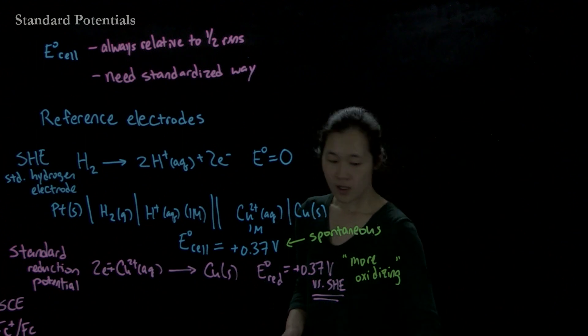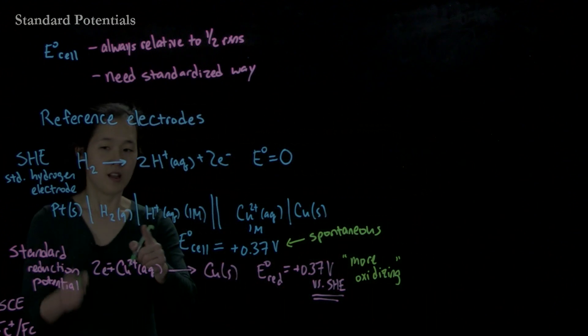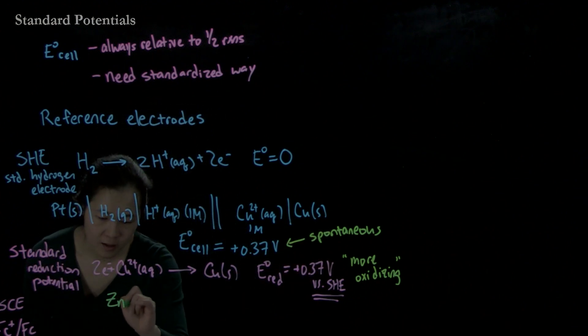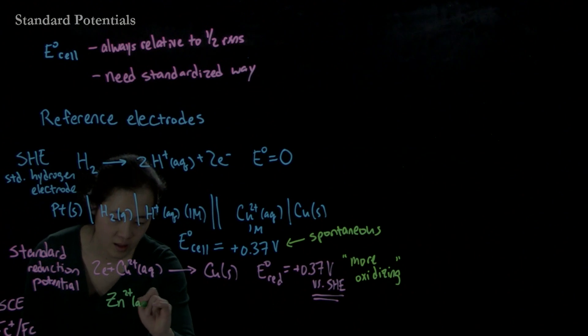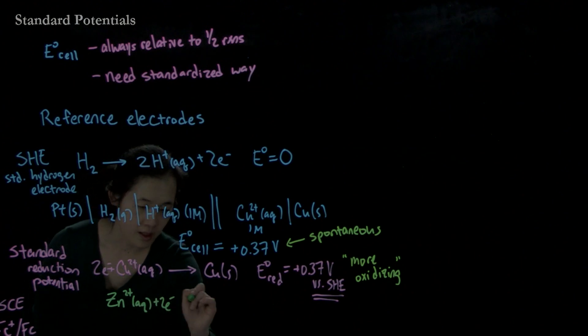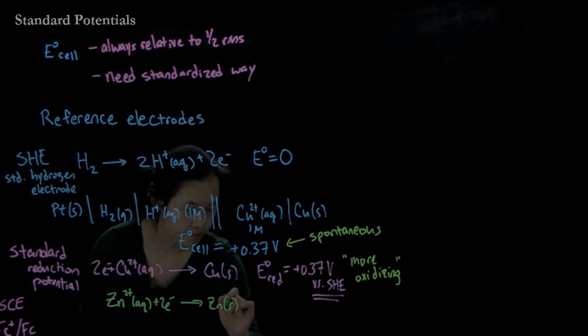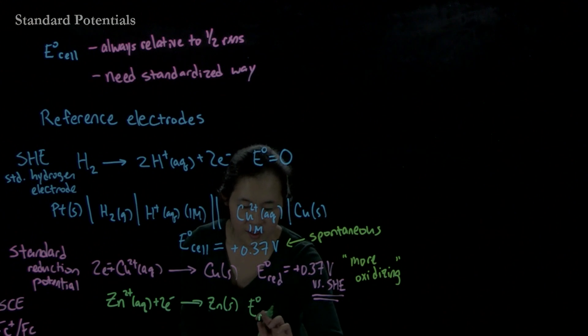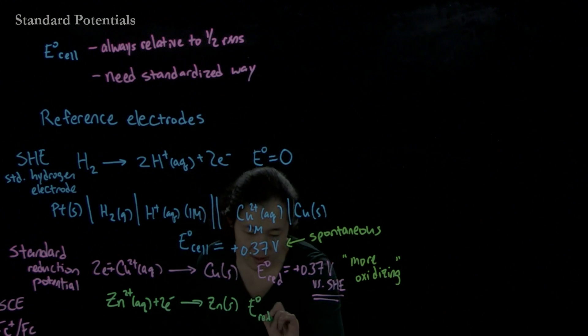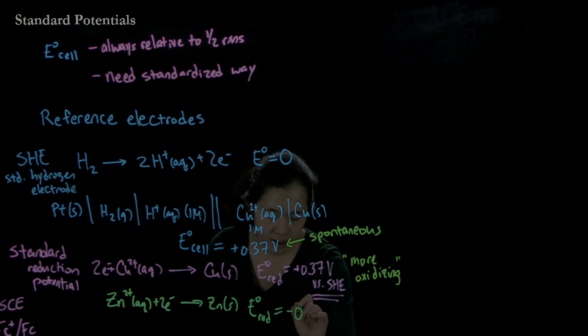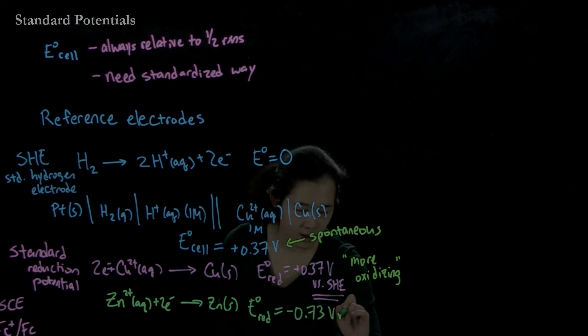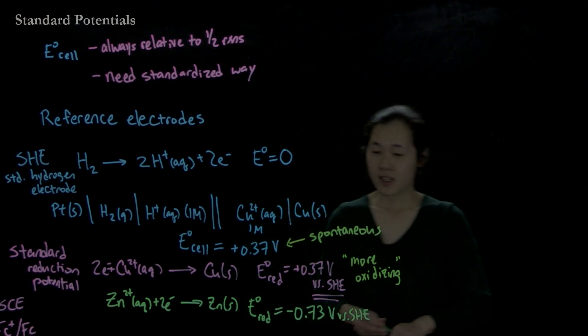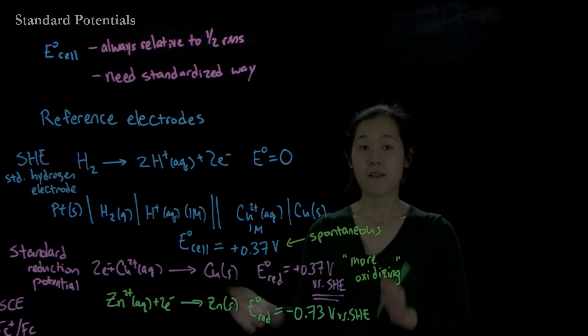In contrast, if we did a different reaction, if we want to think about if we did this exact same electrochemical cell and we want to look at the reduction potential of zinc 2 plus to zinc metal, this reduction potential - I'll just refer to these as E naught for real - this is a reduction potential, is actually negative 0.73 volts versus SHE. So what this means is that this zinc 2 plus is not very oxidizing.